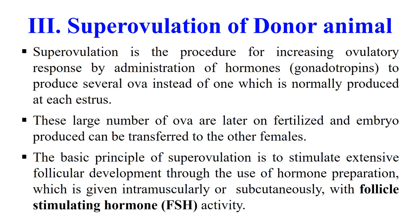The next step is super ovulation of the donor animal. Super ovulation is a procedure by which we increase the ovulatory response by injecting gonadotrophic hormones. By this procedure the animal starts producing several ova instead of just one, since normally during one estrus cycle they produce one ovum. These large numbers of ova are later fertilized and the embryos produced can be transferred to other females. We stimulate follicular development through hormone preparations given either intramuscularly or subcutaneously, generally using FSH — follicular stimulating hormone.